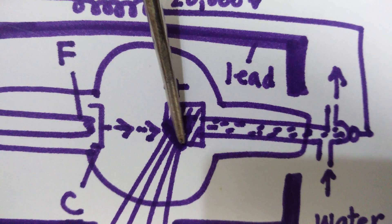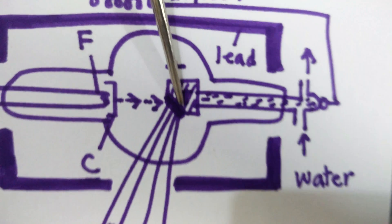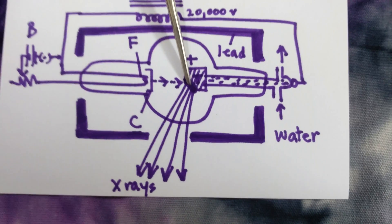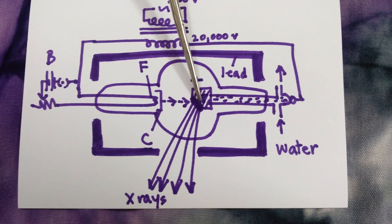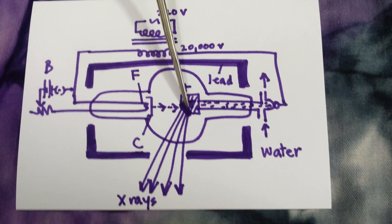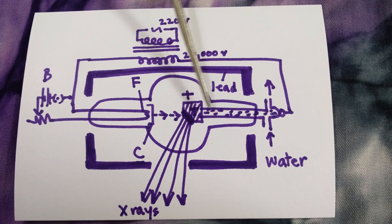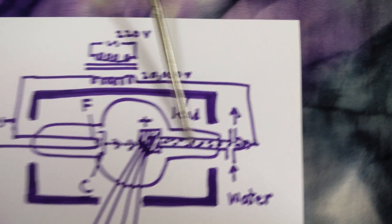On this surface is a target T made of a metal with high atomic weight and high melting point, like tungsten or molybdenum. The copper block is fixed at one end of a hollow copper tube through which water flows.